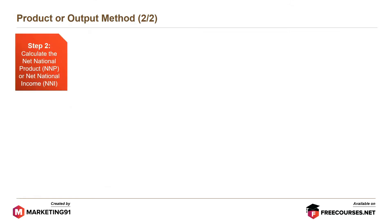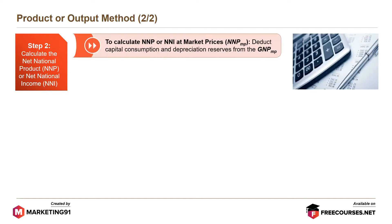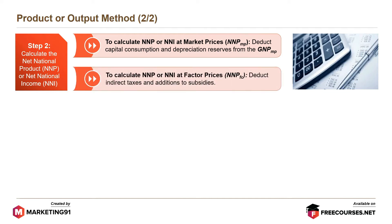Step 2 is to calculate the Net National Product or NNP, or Net National Income or NNI. To calculate NNP or NNI at market prices, i.e. NNP-MP, deduct capital consumption and depreciation reserves from the GNP-MP. To calculate NNP or NNI at factor prices, i.e. NNP-FC, deduct indirect taxes and the additions to subsidies.